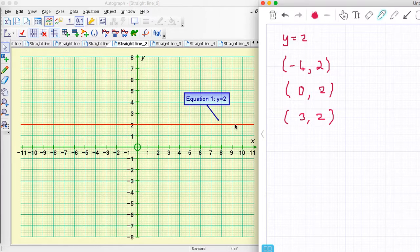So here's my line y equals 2. It's always going to be going through coordinates where y is 2. The x coordinate changes all along here, but the y coordinate is the same.